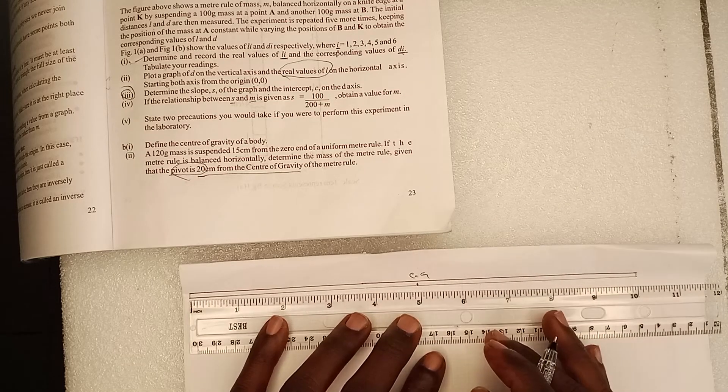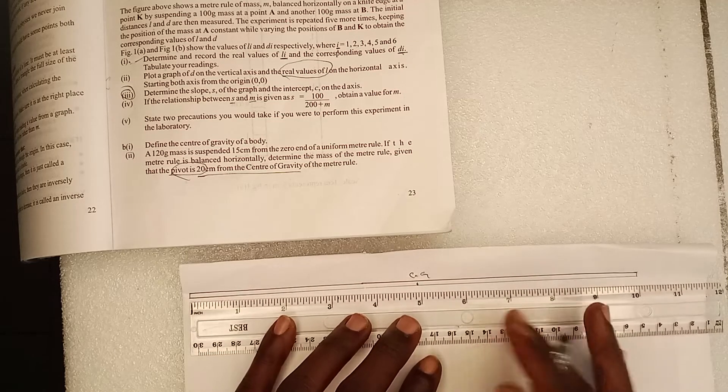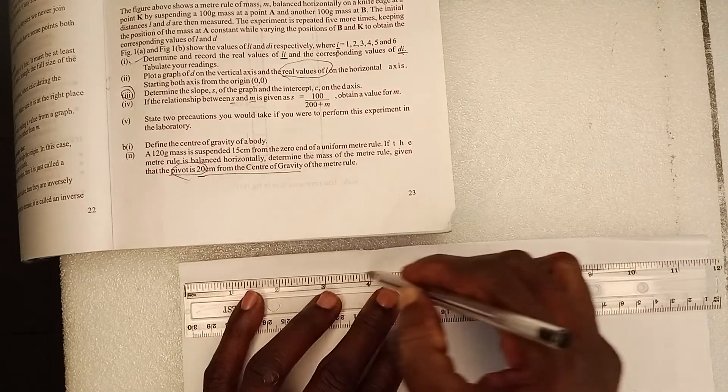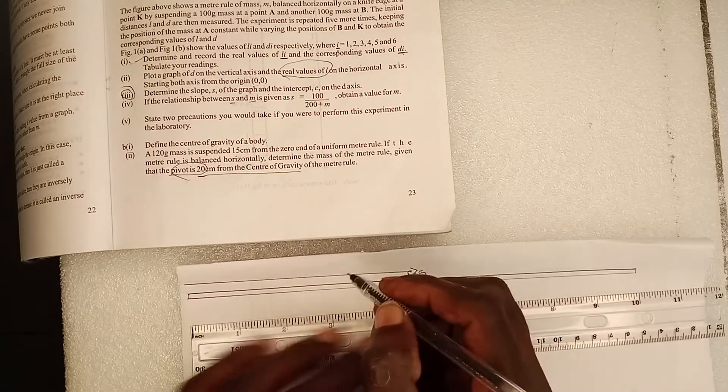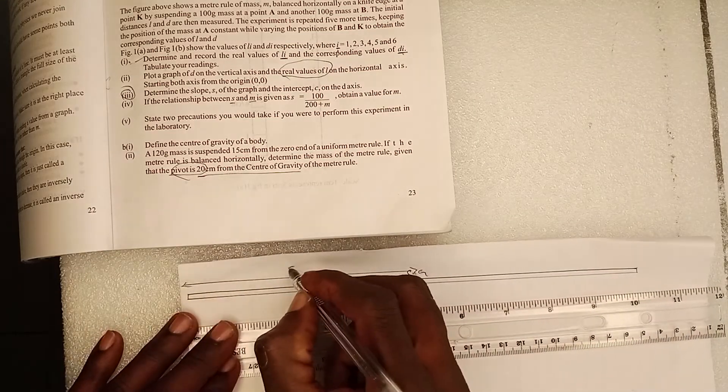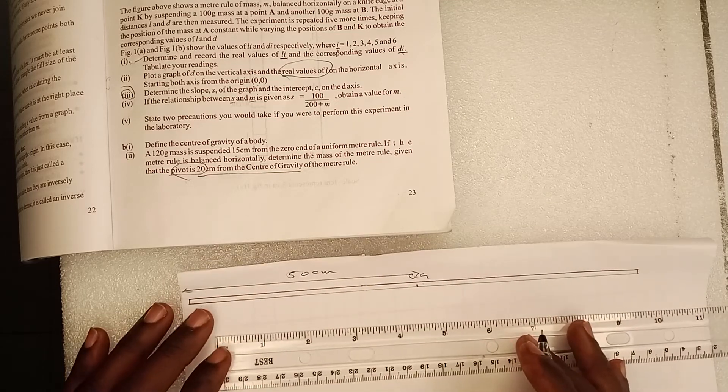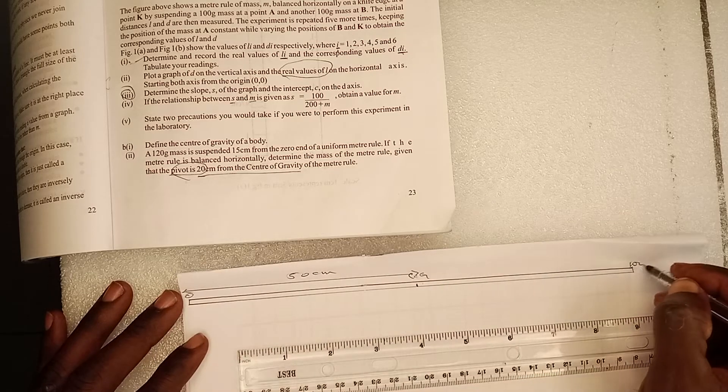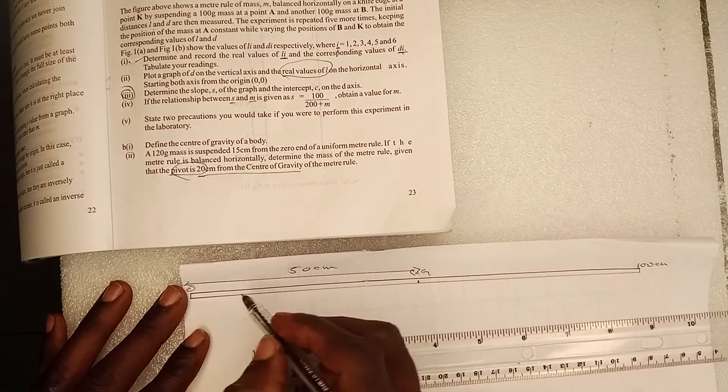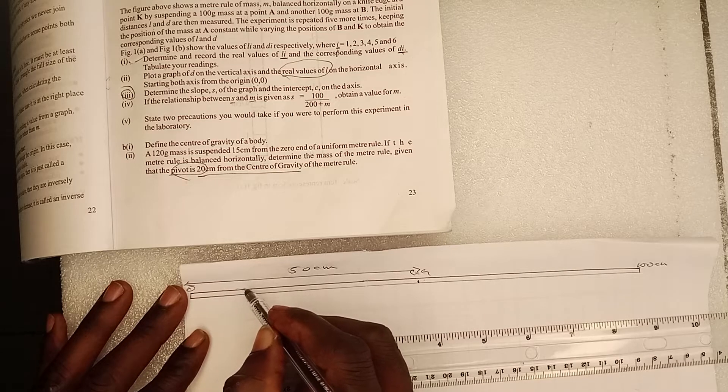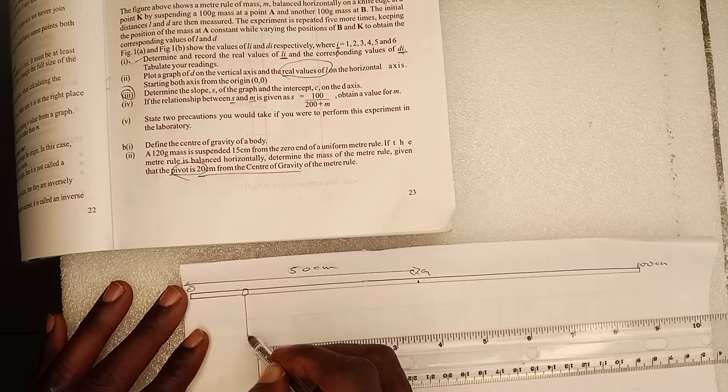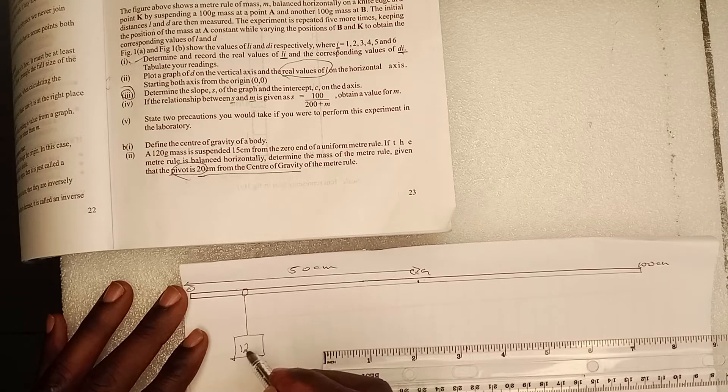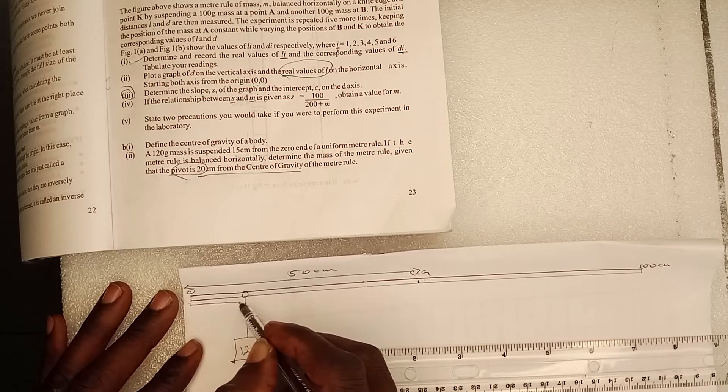Now the center of gravity is always at the 50 cm mark for a uniform meter rule. So this is the 50 cm mark, this is zero, and this is 100 cm mark. Good. Now the weight was hung at the 15 cm mark, the weight of 120 grams at the 15 cm mark.